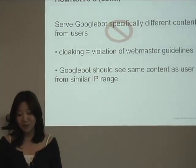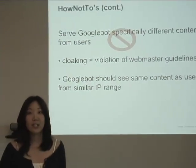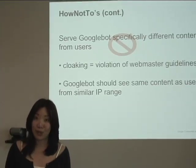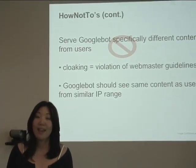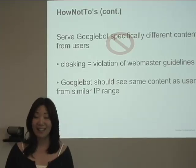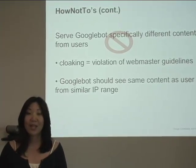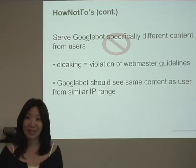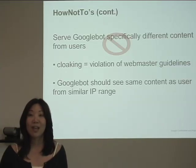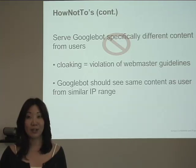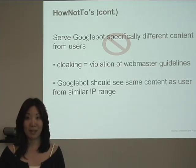Another how-not-to is to serve Googlebot specifically different content than you do to users. This is called cloaking, and it's a violation of our webmaster guidelines. If you're implementing IP delivery, you'll want to serve Googlebot the same content that you serve to users with a similar IP address.